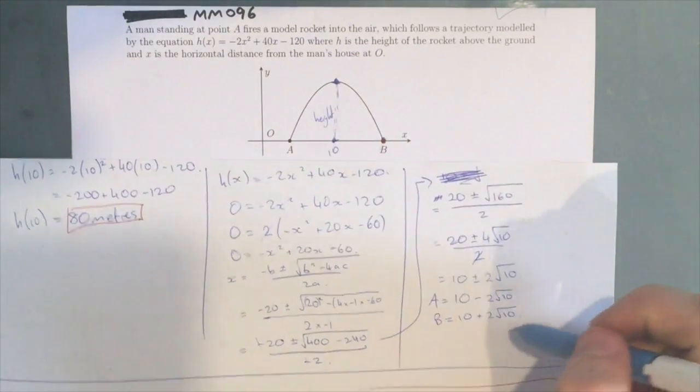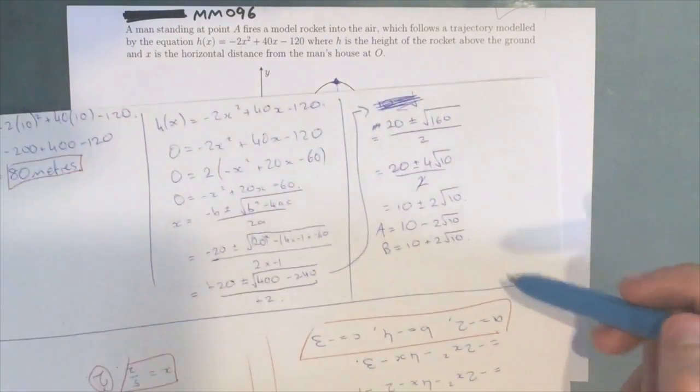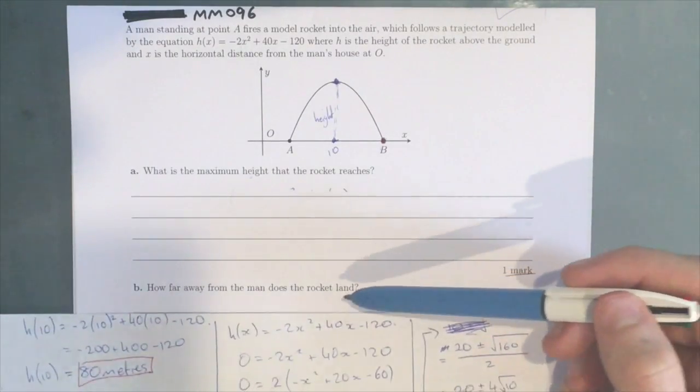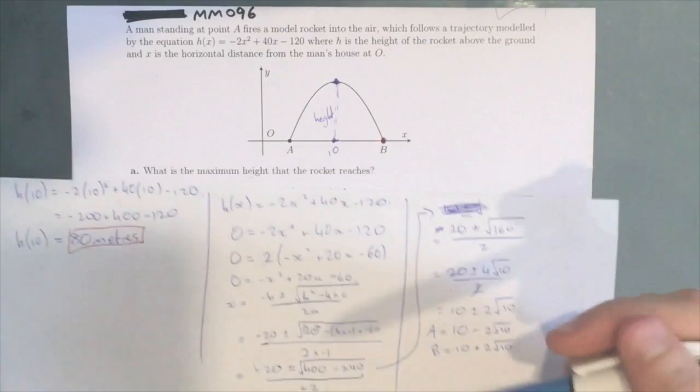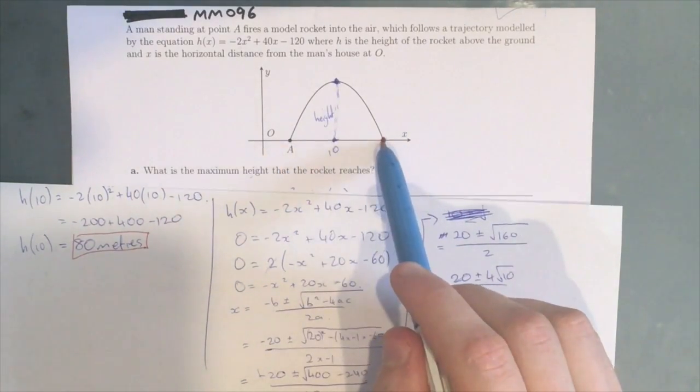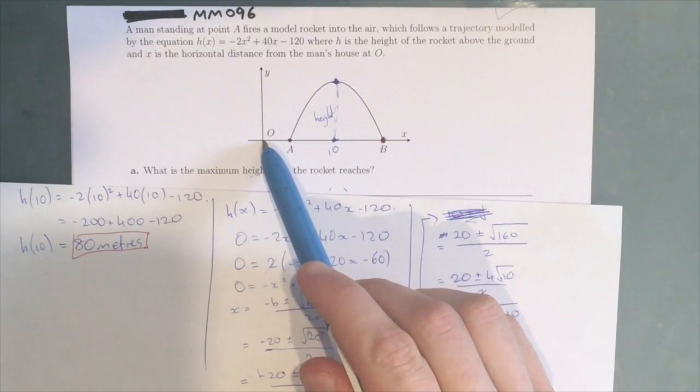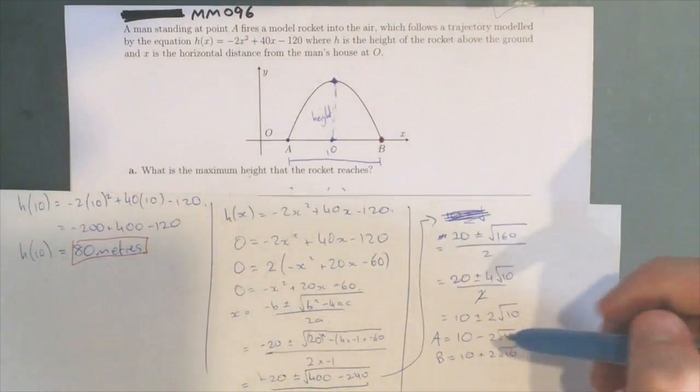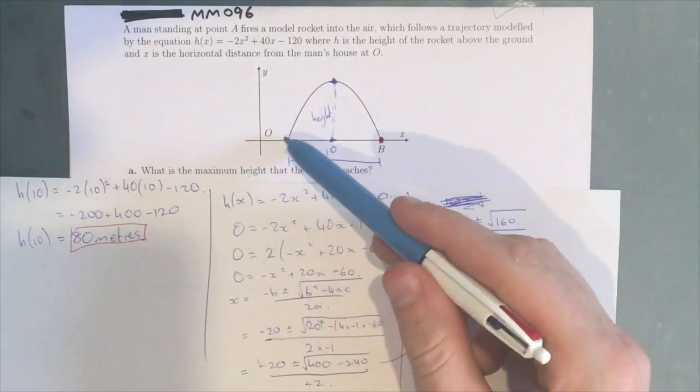Now, do not fall into the trap of saying that 10 + 2√10 is the distance away from the man, because it's not. As you can see here, B is the distance away from the house at O, but we're actually looking for the distance from the man, which is this section here. So the way we figure that out is B minus A.